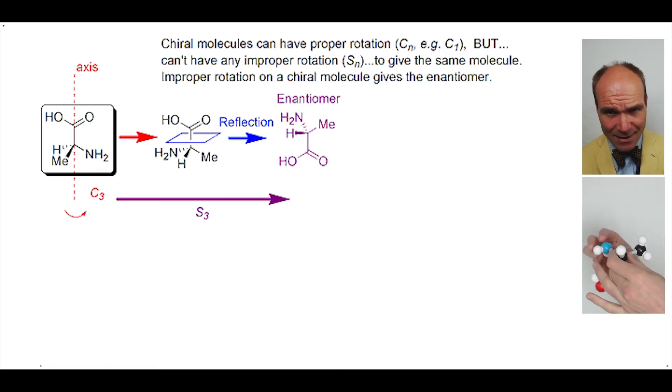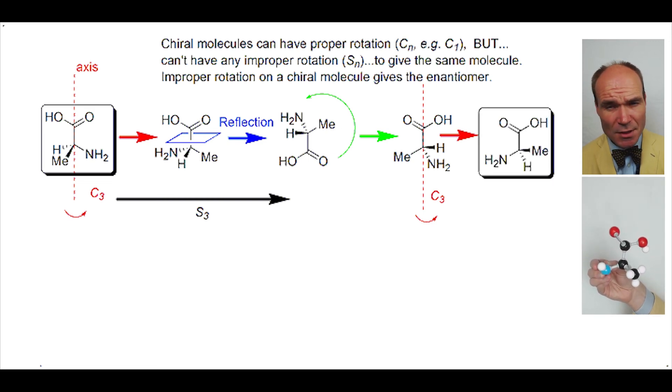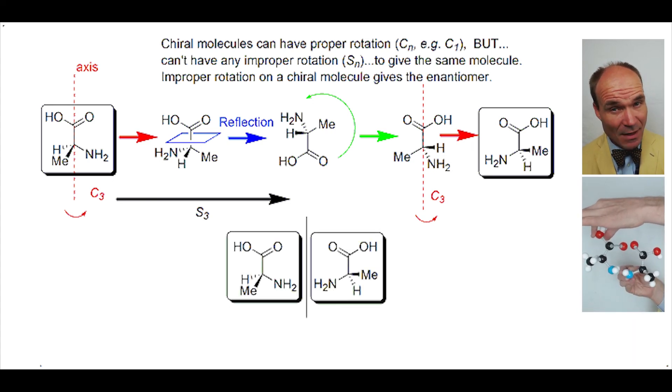Let's check that. We will take the lower carboxylic acid and rotate the whole molecule by 180 degrees so it becomes the upper carbon and vice versa. Now we will reverse the original C3 because it didn't change the molecule. We just want to look at the effect of the reflection. If you look at the original and then this final molecule together, you will see that they are mirror images of each other. They are enantiomers.